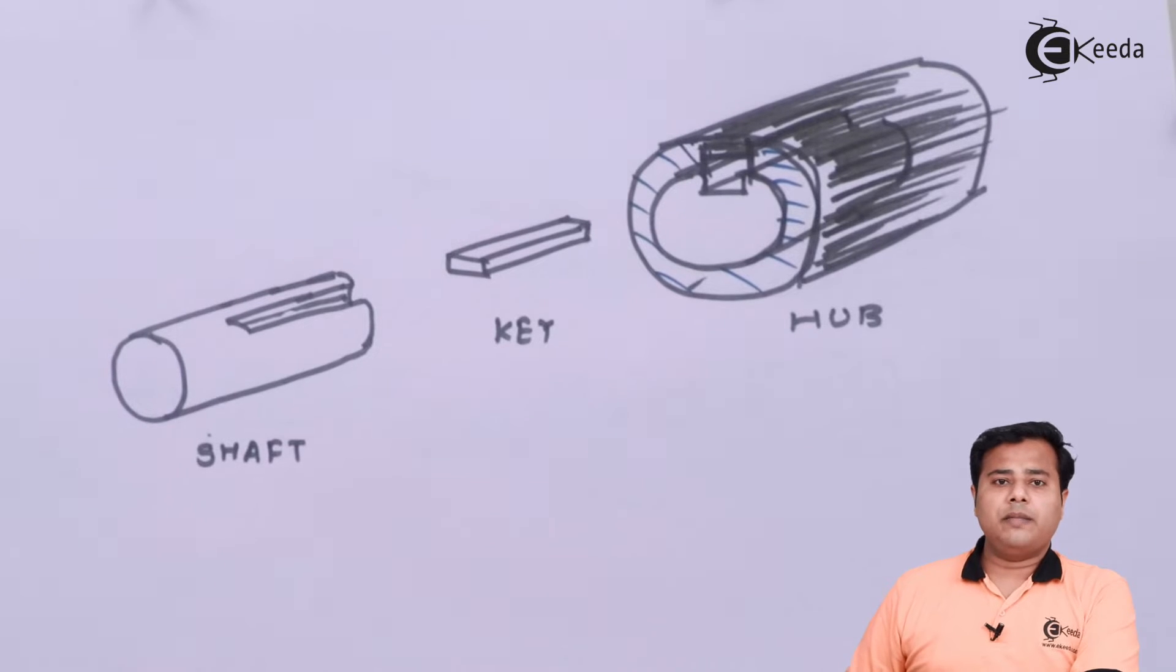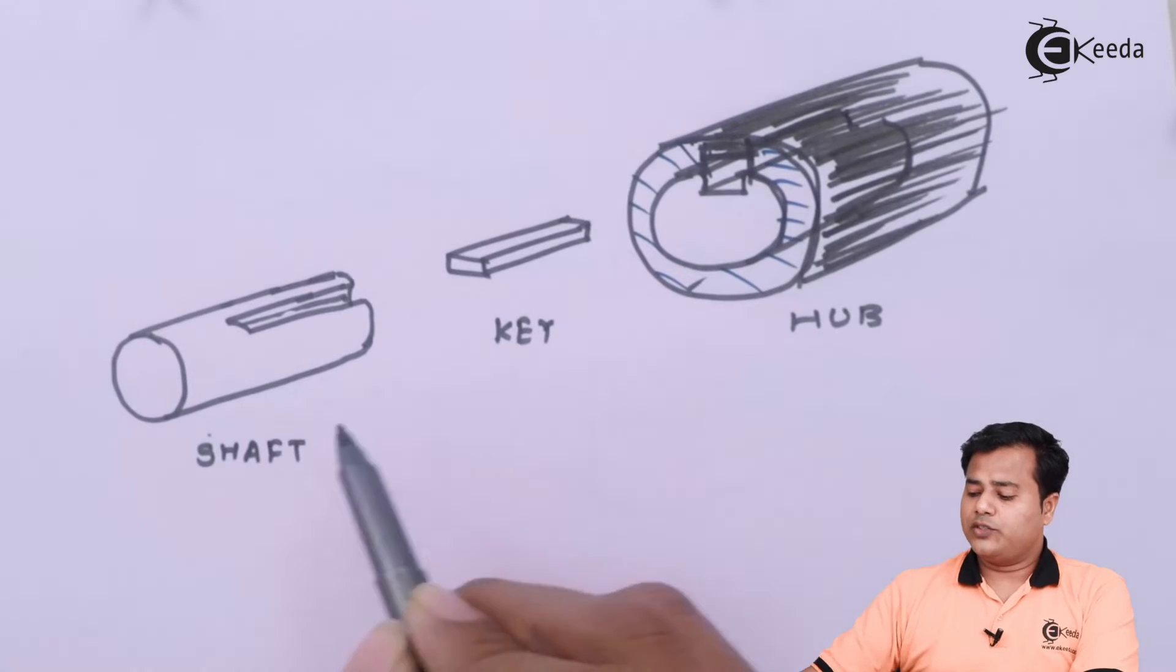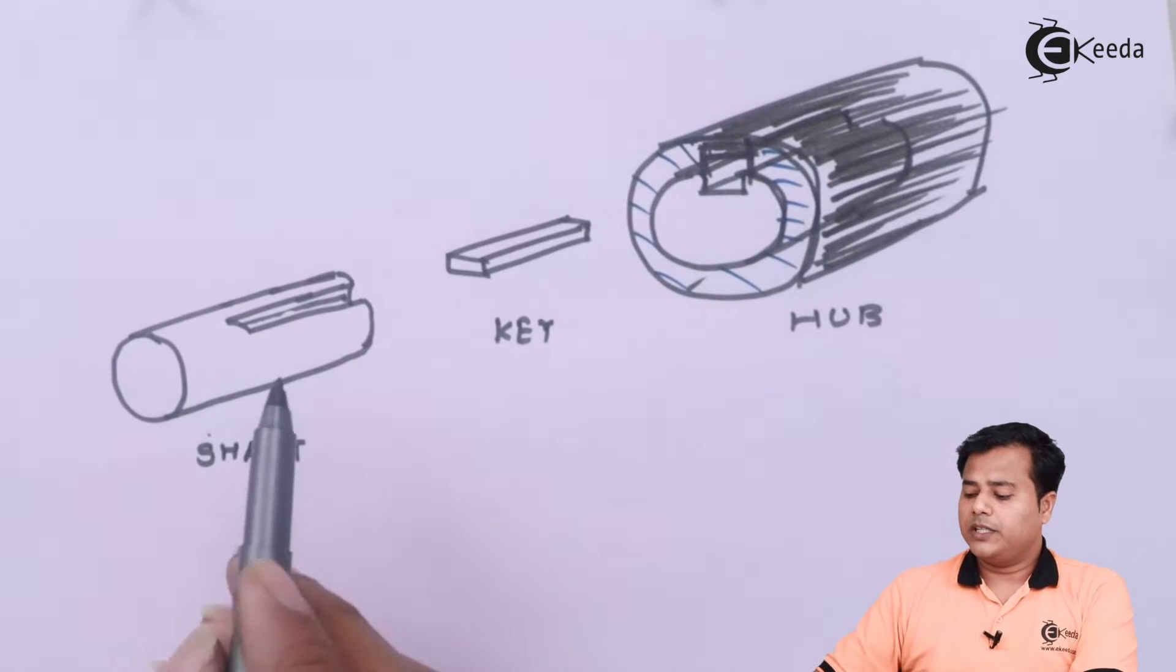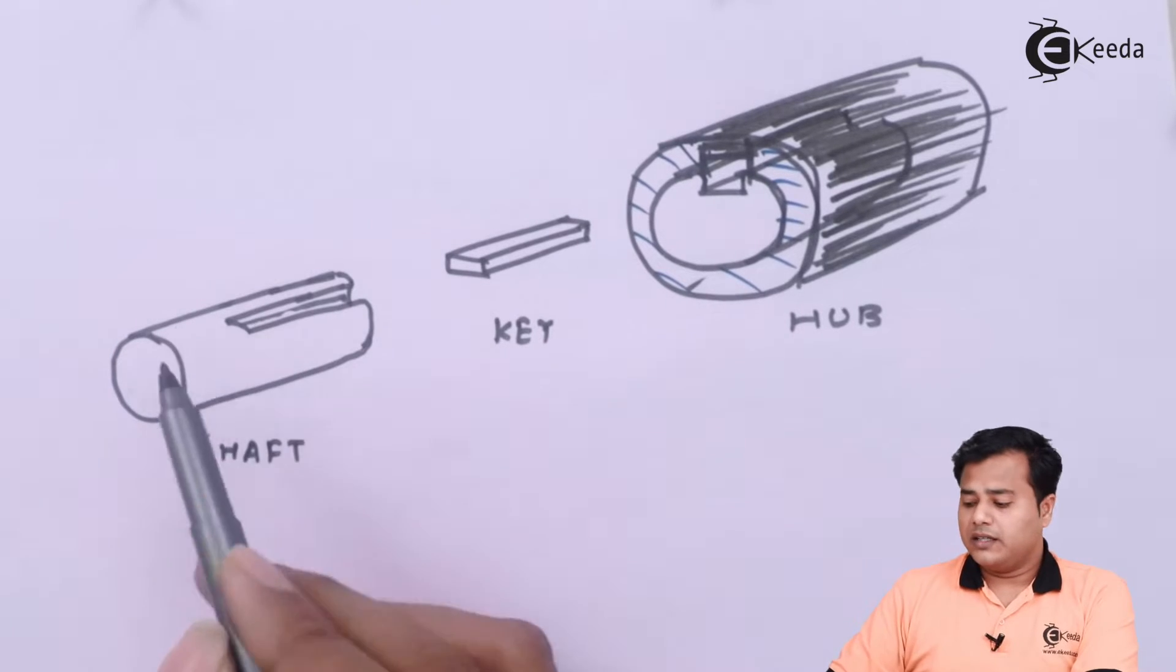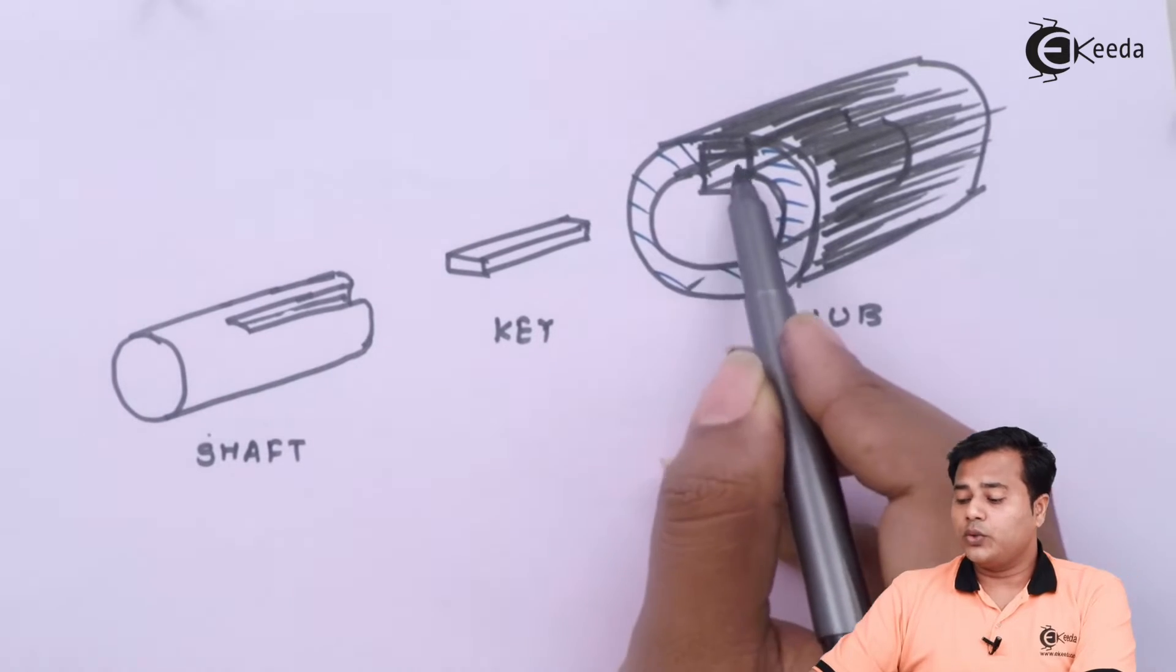Let us look at the schematic which is drawn for the key. Key generally connects these two parts which are called shaft and hub. As you can see in this picture, shaft has a groove inside it whereas the hub has also a groove inside it.